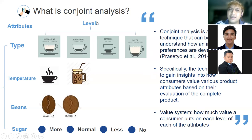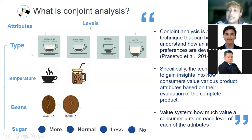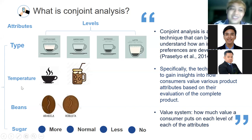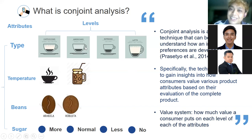So what is conjoint, actually? Why did I explain about coffee? Because you drink coffee every day — you actually do conjoint every day. In conjoint, we don't use the terms 'factors' or 'variables.' We use the term 'attributes.' The type of coffee, the temperature, the beans, the sugar — these are the attributes of the coffee. And the specific options within each attribute — like hot or cold — are what we call the levels.